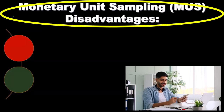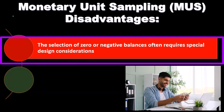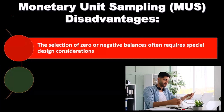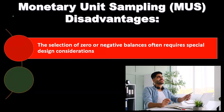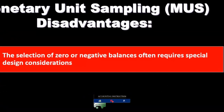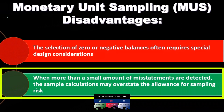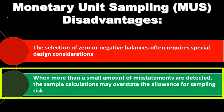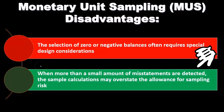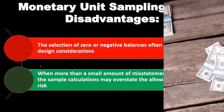Monetary unit sampling disadvantages: the selection of zero or negative balances often requires special design considerations, as a zero or negative balance can throw off the calculations. Additionally, when more than a small amount of misstatements are detected, the sample calculations may overstate the allowance for sampling risk.